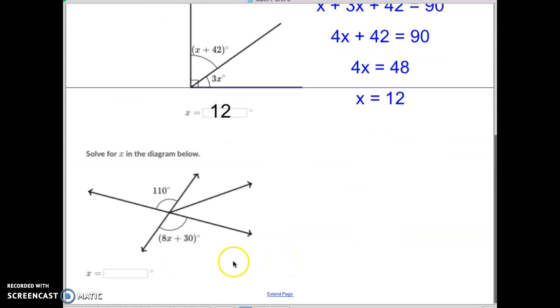One more. Let's go through one last one here. You'll remember this is a vertical angle problem here. So this one, we're going to have the 8x plus 30 is equal to the 110. How do I cancel out a positive 30? Add a negative 30. Whatever I do to one side, I do to the other side. So what's 110 plus negative 30? Well, that would be 80.